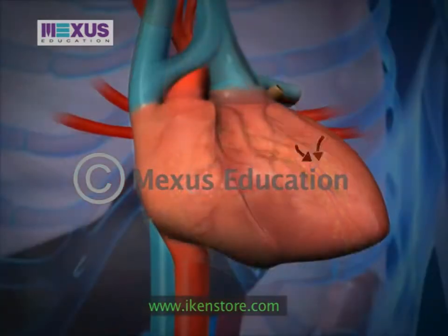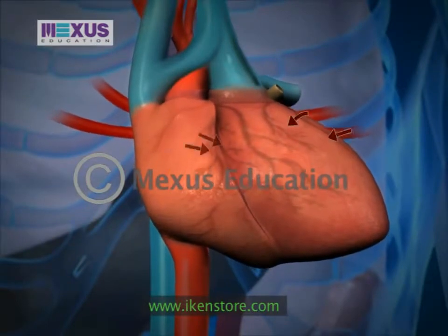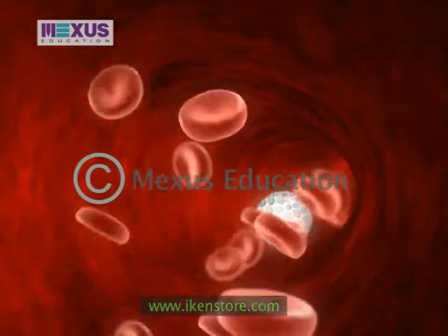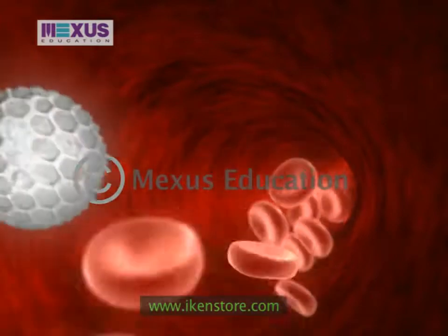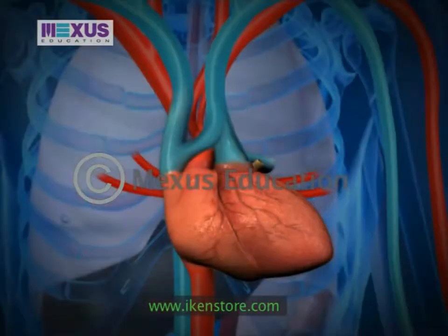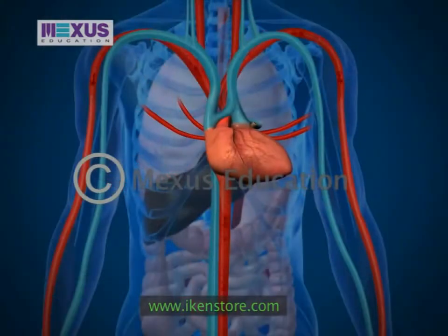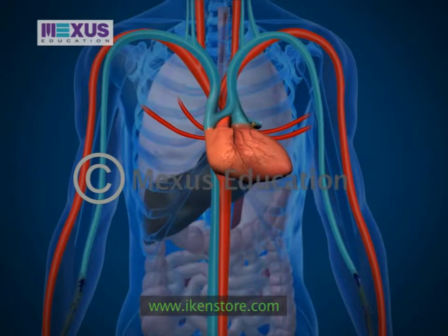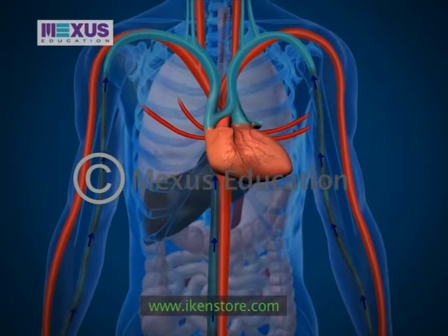The main job of the heart is to pump blood through a network of blood vessels. These blood vessels form a loop that starts at the heart, goes out through your body, and then ends up back at the heart again.